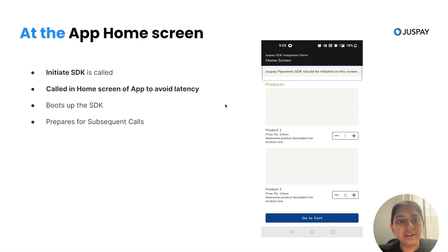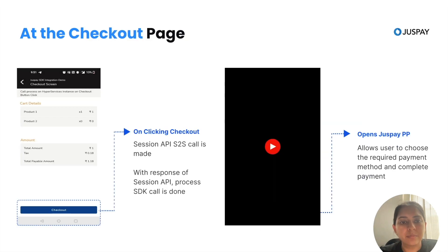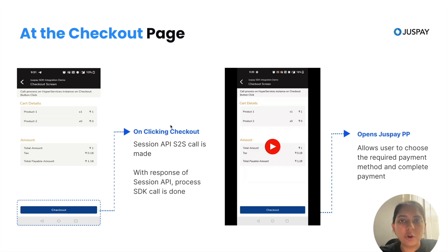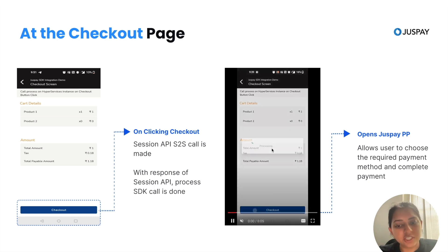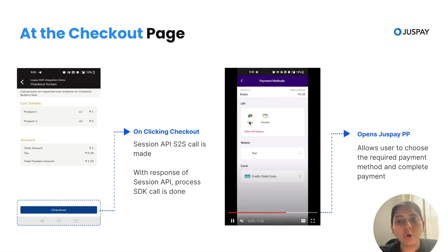Now we will understand all four calls by taking an example of a demo application. On the screen you can see the home page of a demo application — here you have to do the initiate SDK call. When the user reaches the checkout page and is about to click on checkout, you need to call the session API and pass the response of the session API to the process SDK call. If the session API and process call are done correctly, the user will see the JustPay payment page and can attempt a transaction.